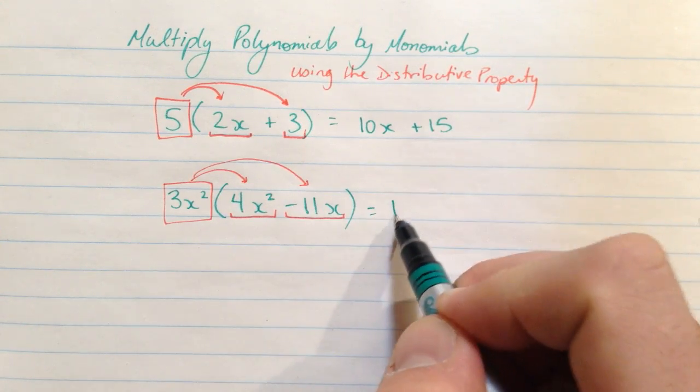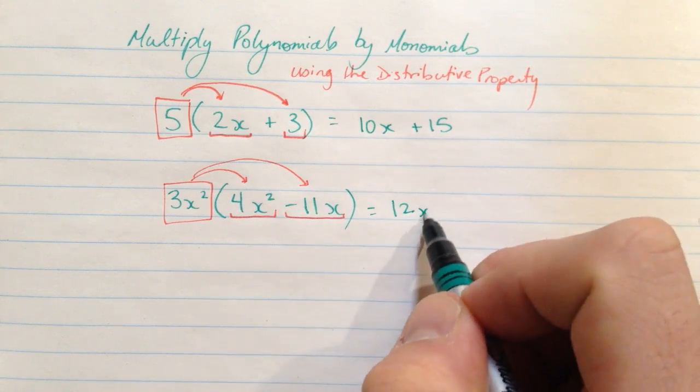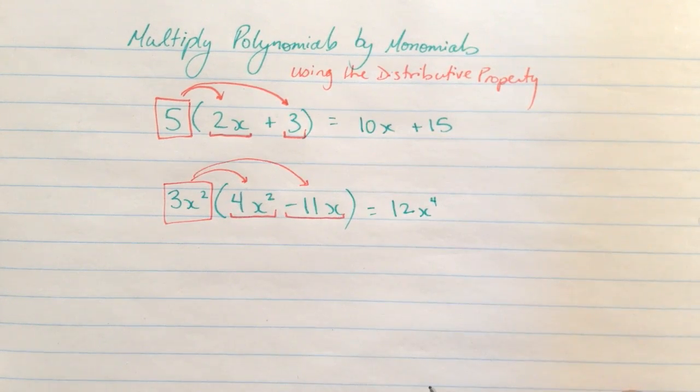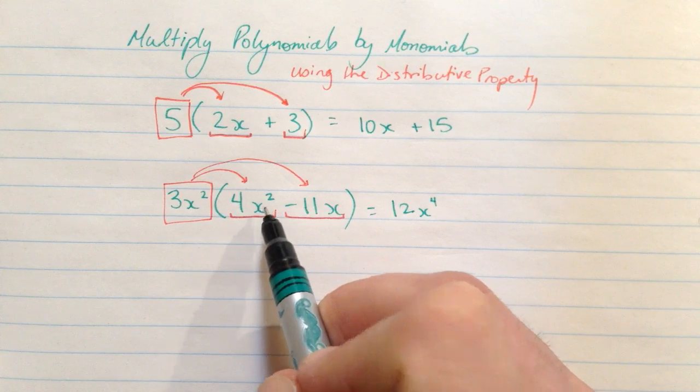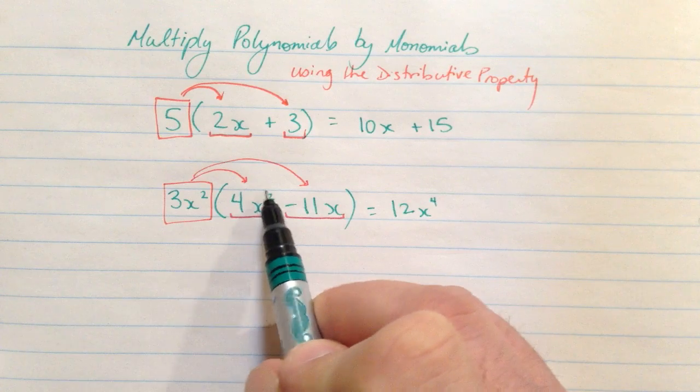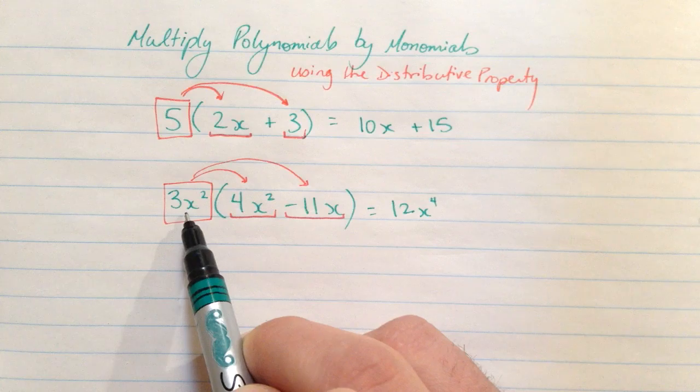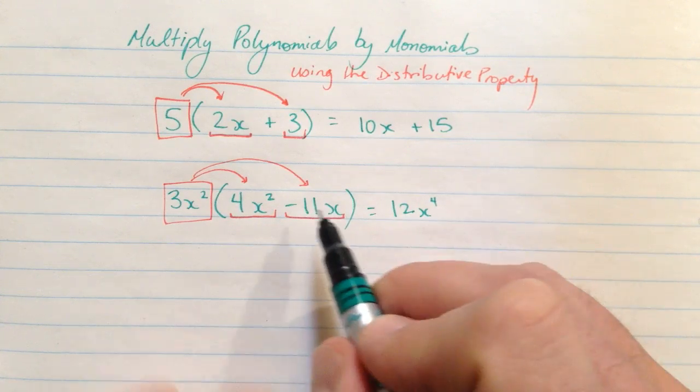3 times 4 is 12. That's positive. x squared times x squared is x to the exponent 4. 1, 2, 3, 4 x's, or if you realize that they have the same base of x, and when you're multiplying, you can add the exponents together. That's the first term. That came from 4x squared times 3x squared.